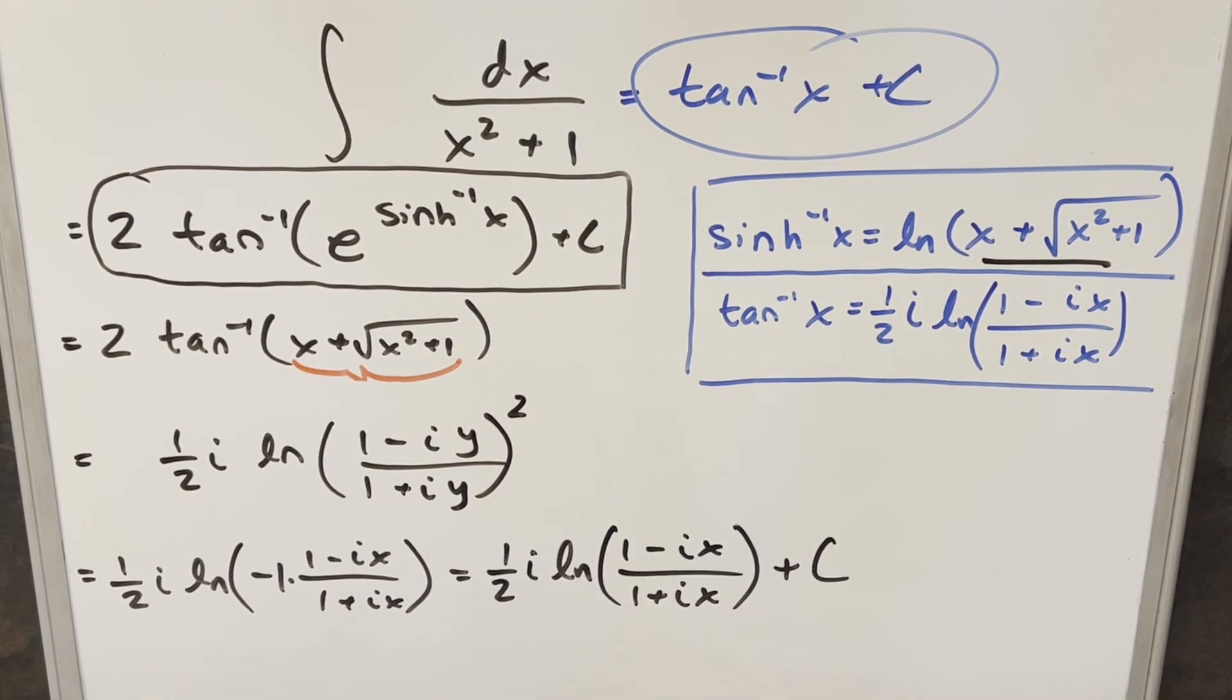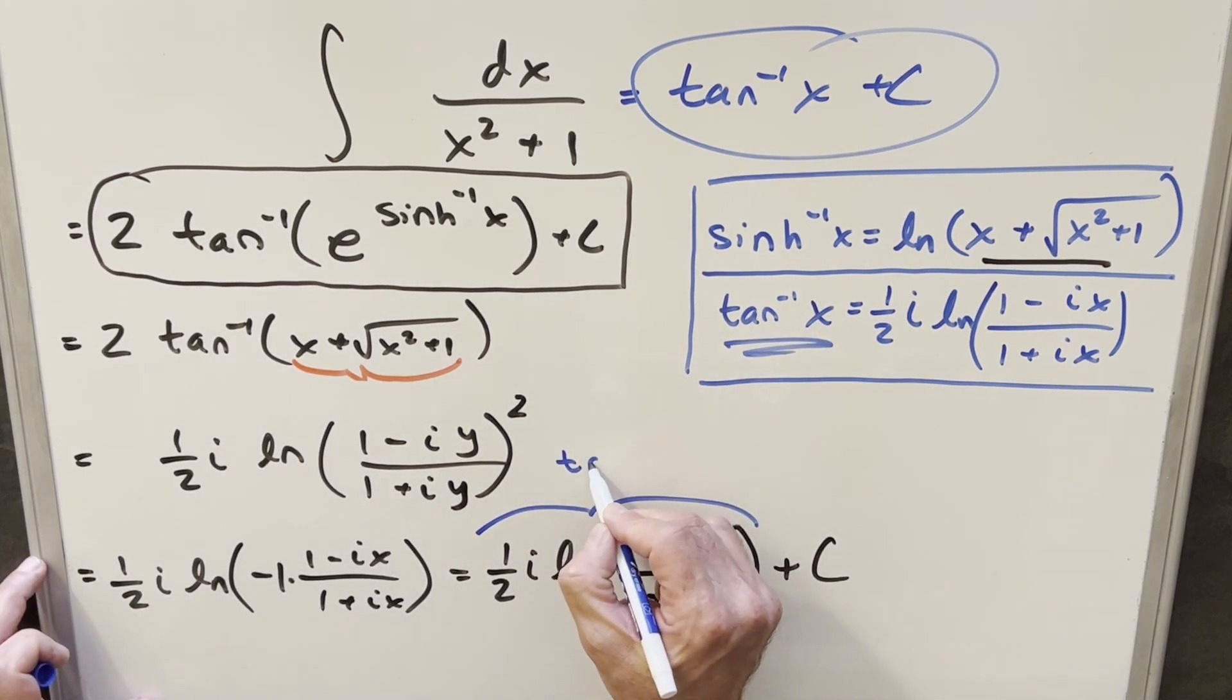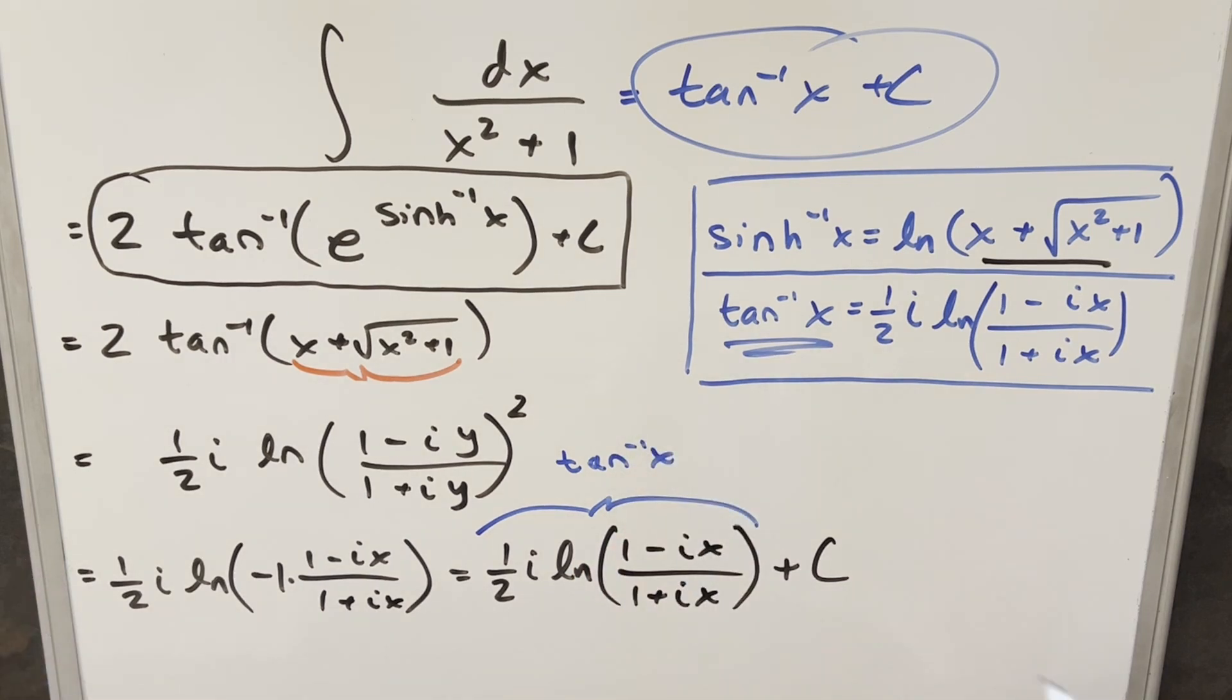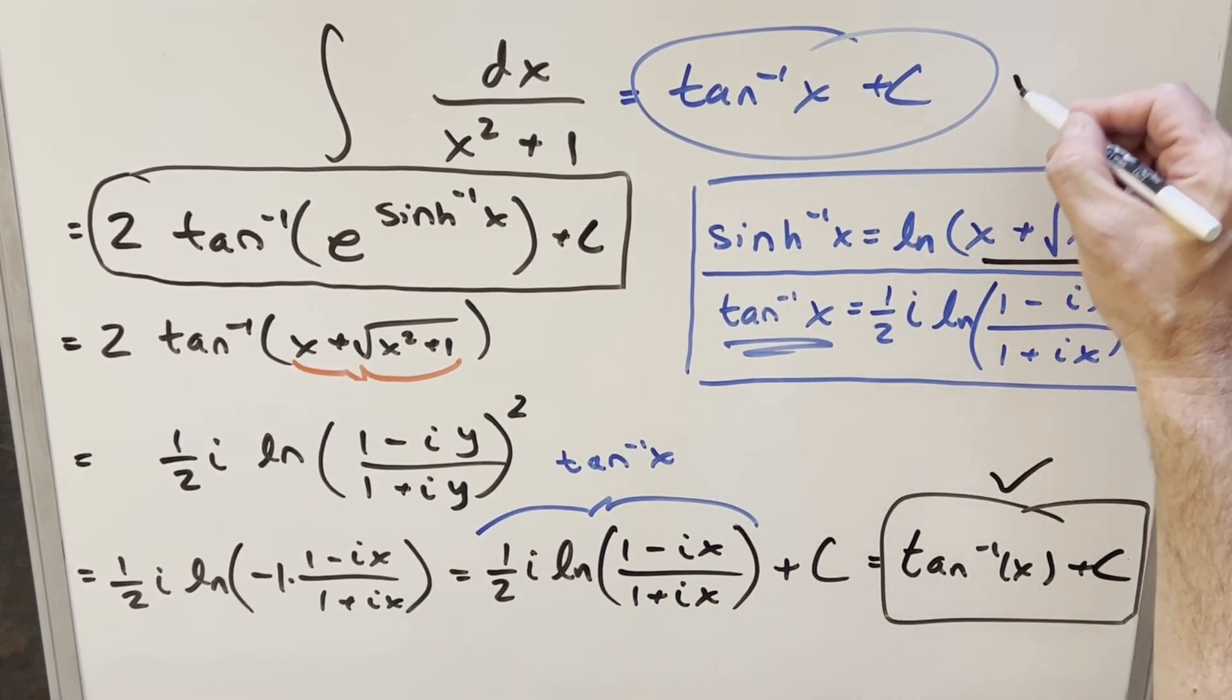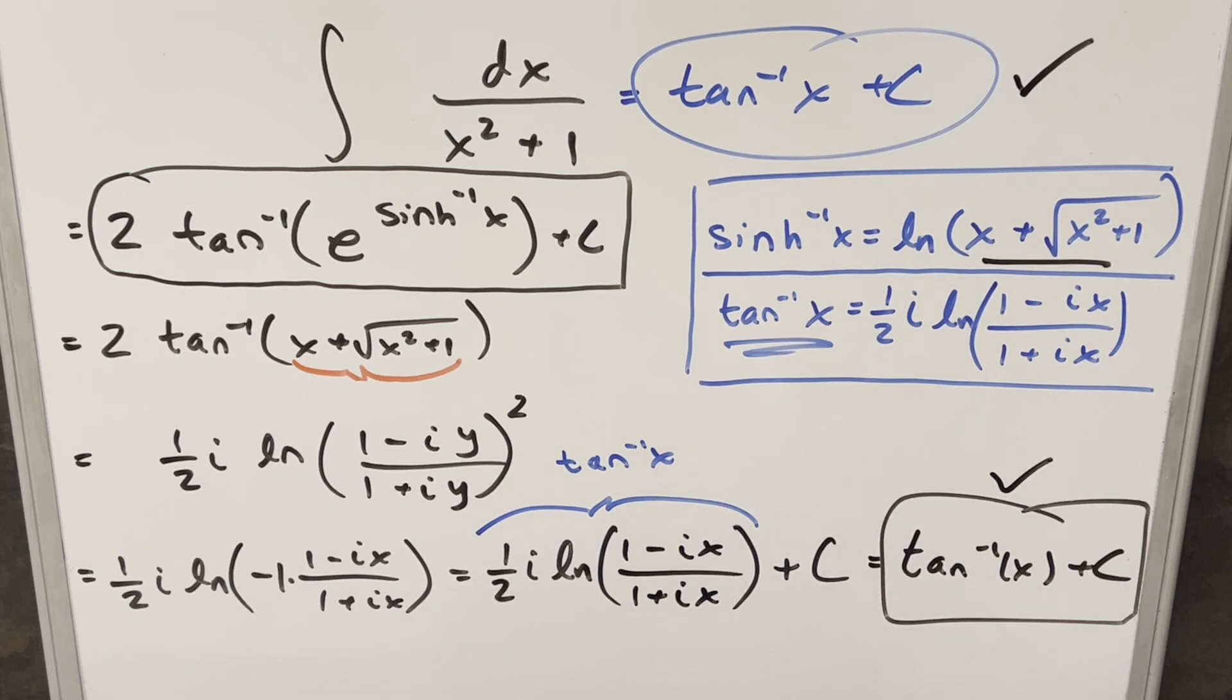And then at this point, what do we notice? This piece right here, this is exactly this. This is going to be just arctan of x. So putting it all together for my final solution of this, we just get arctan of x plus c, and that's it. And of course, we matched our solution we found earlier. It was just a slightly longer method, a few more steps. But I think it was well worthwhile.